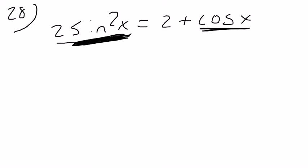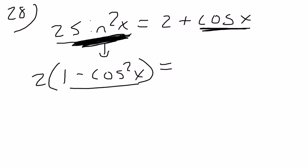I actually know that sine squared is 1 minus cosine squared. So I'm going to substitute this in for this, and this equals 2 plus cosine of x.